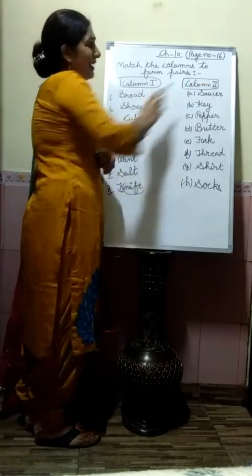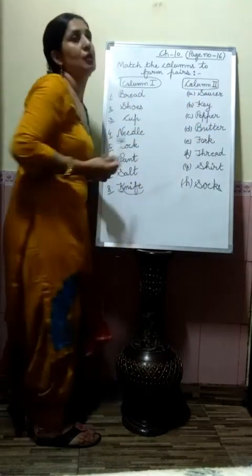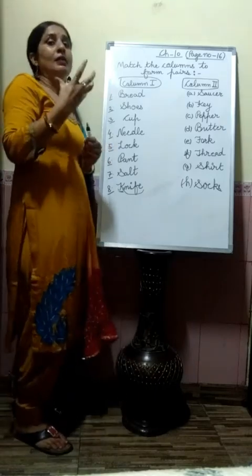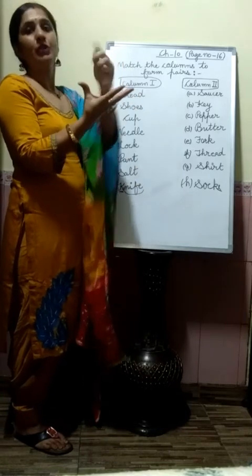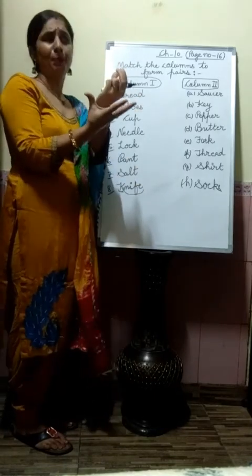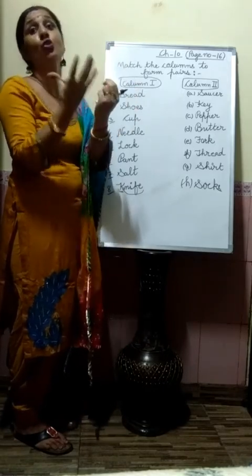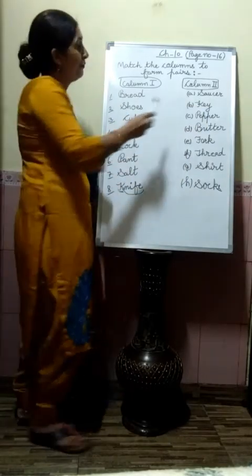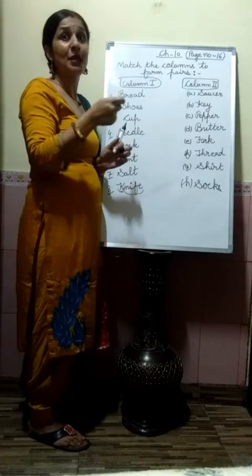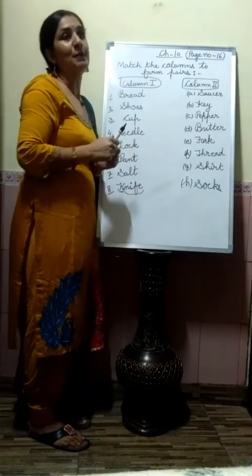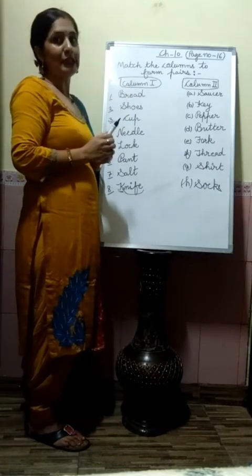Now let us start column two. First one is saucer — S-A-U-C-E-R — saucer. Saucer is a dish. It is the small dish placed under your coffee cup or tea cup. Second is key — K-E-Y — key. Key means chabi. We use a key to lock; without a key you cannot lock.